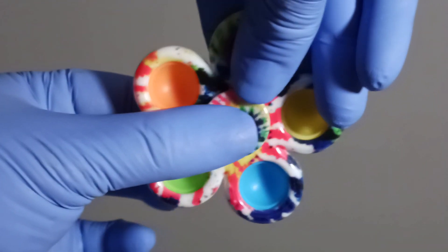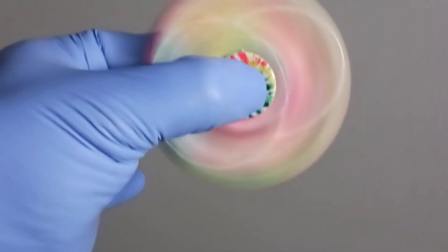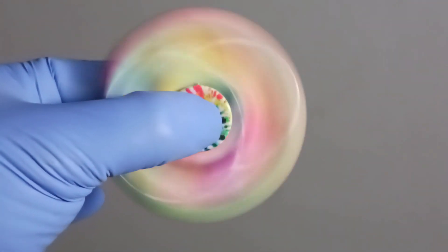The design of fidget spinners is such that they can be easily spun with a flick of a finger, and they continue spinning for a considerable amount of time due to their low friction and high angular momentum.